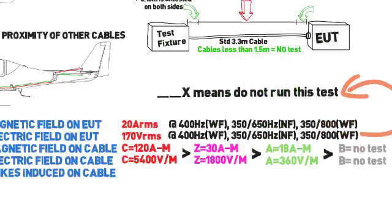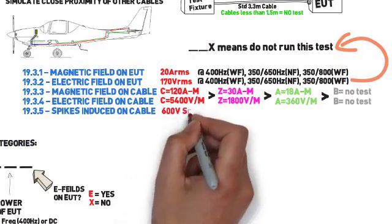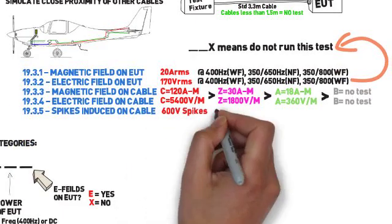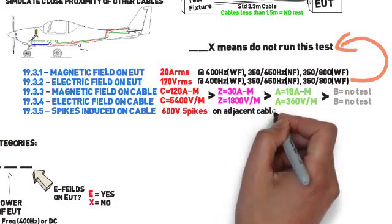Last but not least, spikes induced on the interconnecting cable has a test level of 600 volts. This spike is induced on an adjacent cable and not the EUT cable. Okay, let's go over how to run these fairly primitive tests.